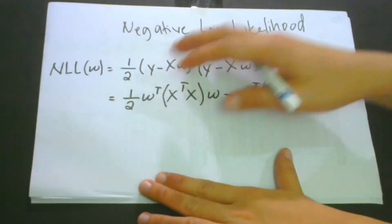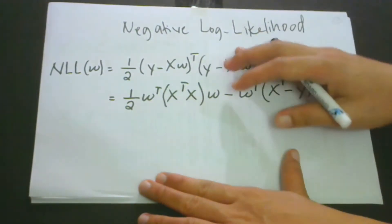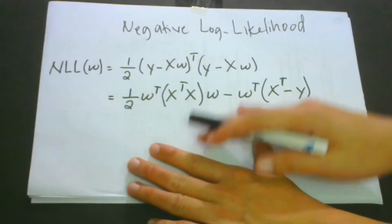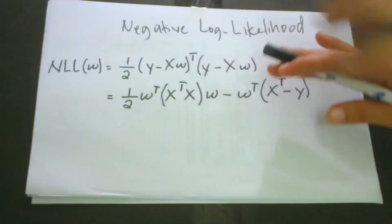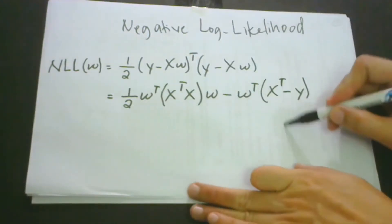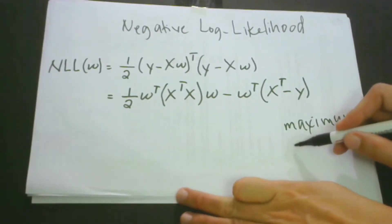We have the negative log likelihood. How is this connected to maximum likelihood estimation? In maximum likelihood estimation, we are actually identifying the parameters for our model. These parameters could be the maximum, and this can also be the minimum.